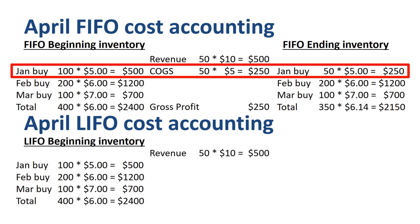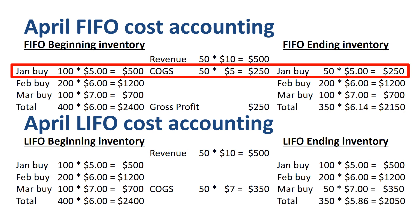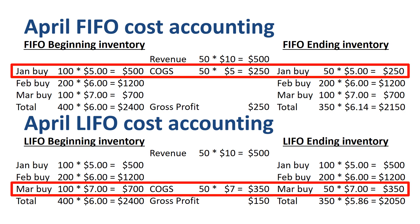With LIFO — Last In, First Out — we assume the newest inventory gets sold first, so the units sold originated from the March buy. What remains in inventory at the end of April is the full 100 units from January, the full 200 units from February, and the remaining 50 units from March — 350 units with a total purchase price of $2050, averaging $5.86 per unit. Under LIFO, the average cost per unit in inventory goes down compared to the $6 previously. The April income statement shows revenue of $500 (50 units × $10), COGS of $350 (50 units × $7), and gross profit of $150.